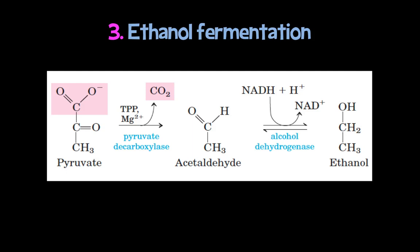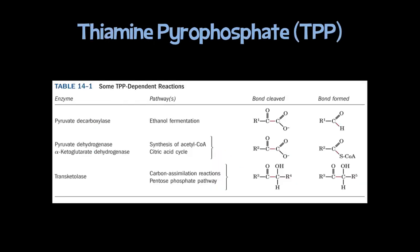Thiamine pyrophosphate (TPP) is a cofactor for three enzymes we encounter in our studies: pyruvate decarboxylase, pyruvate dehydrogenase (PDH), and transketolase — which we will see when we cover the pentose phosphate pathway. This makes a great multiple-choice question: which enzymes use TPP? Answer: pyruvate decarboxylase, PDH, and transketolase.